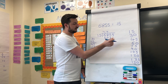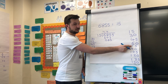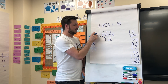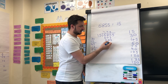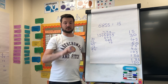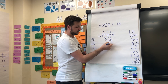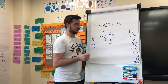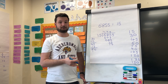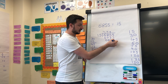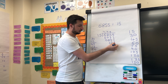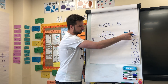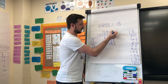Fifteens into eighty-five goes five times. We're going to write five above. Fifteen multiplied by five is seventy-five — write that underneath. Subtract: five take away five is zero, eight take away seven is one. We have ten. Finally, bring it down and repeat it all over again. Fifteens into one hundred and five goes seven times.